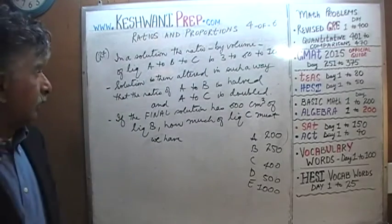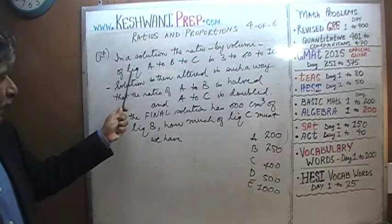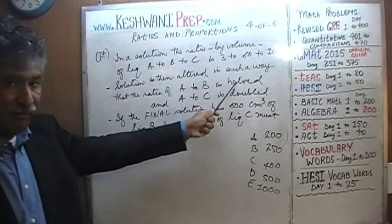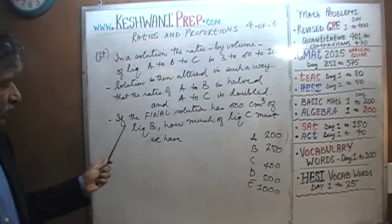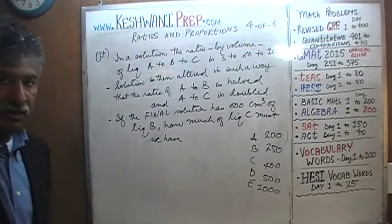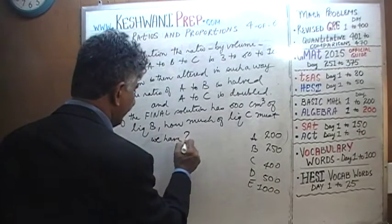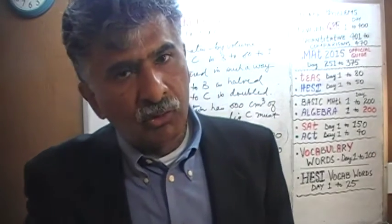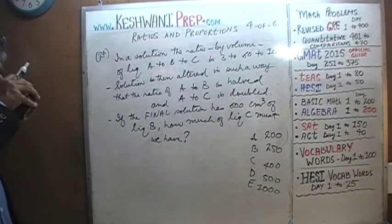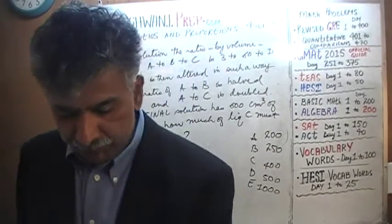The answer choices are: (a) 200, (b) 250, (c) 400, (d) 500, and (e) 1000. I'll give you five seconds to pause and try it yourself. If you're having trouble, don't give up — try it once or twice. The key here — which I'll reveal now as a hint — is to manipulate only two liquids at a time.